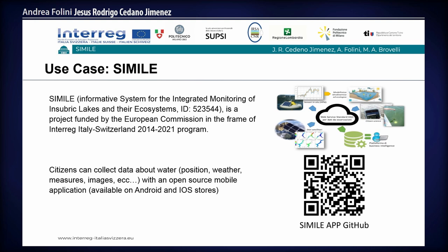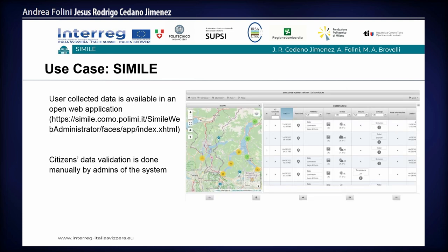The use case we decided to test our prototype on is the Simile project, an Interreg project between Switzerland and Italy for monitoring water in the subalpine lakes — Maggiore, Lugano, and Como. Simile has many data sources, but we are particularly interested in the citizen science section, where citizens can collect data about the water, including position, images, and other measurements, through an open-source mobile application. After collection, the data is available in an open web application where administrators can manually validate it — a quite time-consuming task.